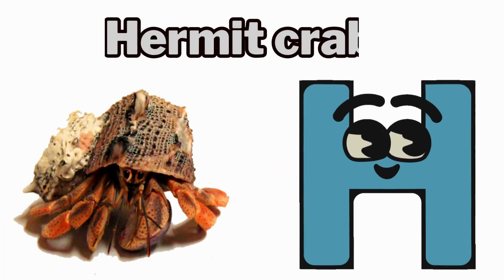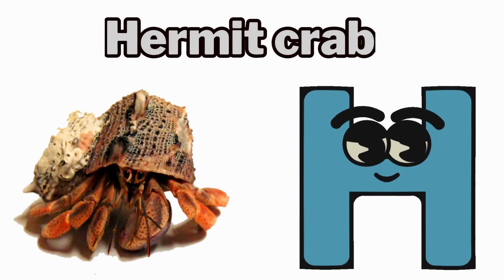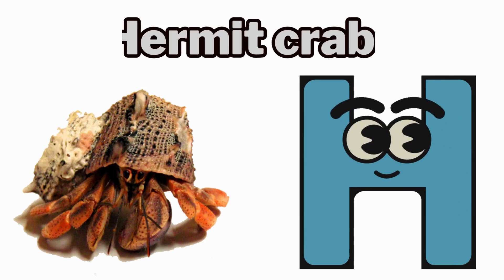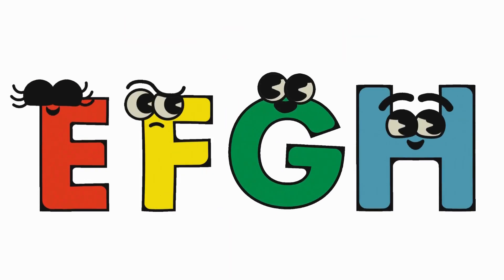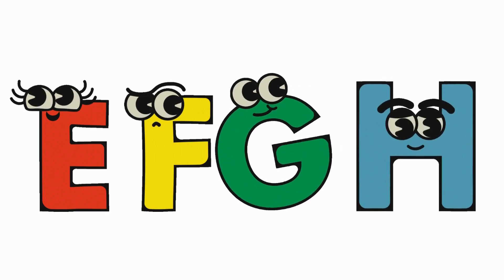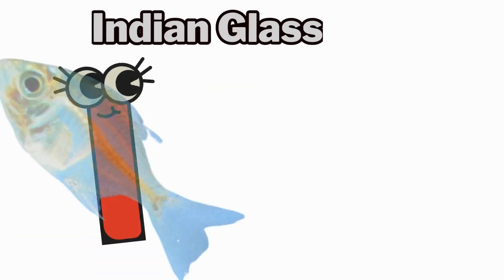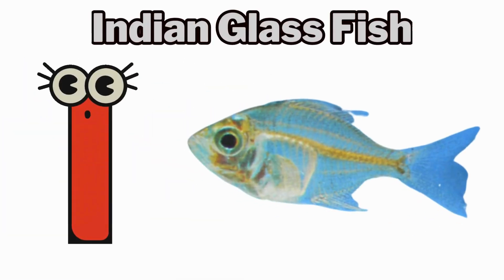H is for hermit crab, ha, ha, hermit crab. I is for Indian glassfish, eh, eh, Indian glassfish.